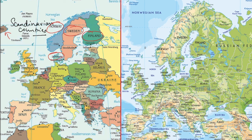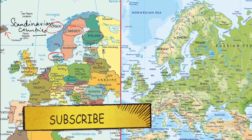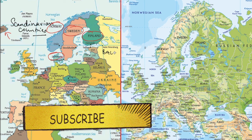After that you should know which are the Baltic countries. These are the three countries that are on the Baltic Sea. Their names are Estonia, Latvia, and Lithuania. So these are the Baltic countries.